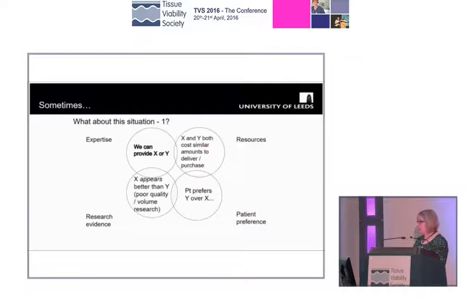Sometimes, for example, you can see that we could provide care in one way or another. This model might be referring to choosing a dressing or a bandage or a drug or an intervention, or it might be the way we organize care. Say, for example, we could deliver things in one of two ways, and the resource implications are not particularly different. However, those of you practicing clinically will be faced with challenges when the evidence points one way and the patient preference points the other way.